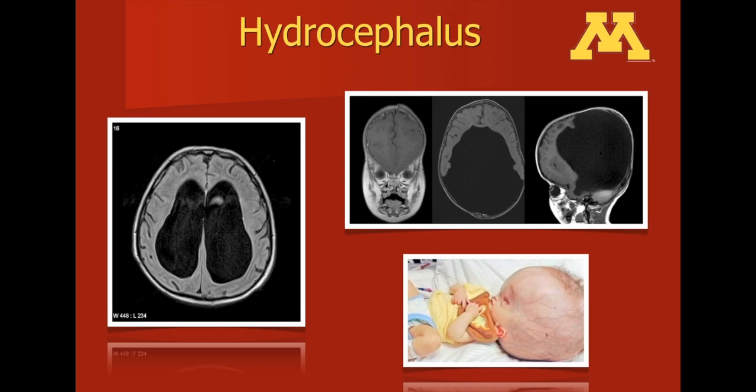An abnormal production or abnormal absorption of cerebrospinal fluid will result in hydrocephalus. As with the kitchen sink analogy, because you're continuously producing cerebrospinal fluid, when the drain is obstructed, the water will back up and that will result in hydrocephalus.